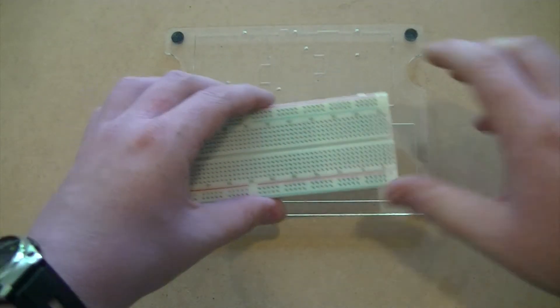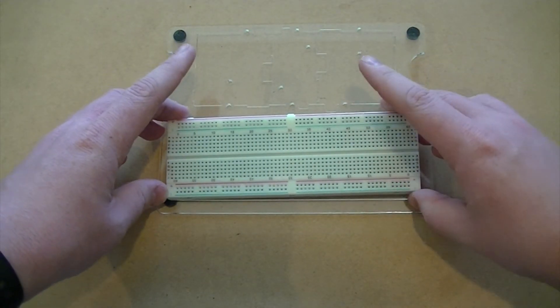We can then peel off the paper backing from our breadboard and stick it down in the designated area.